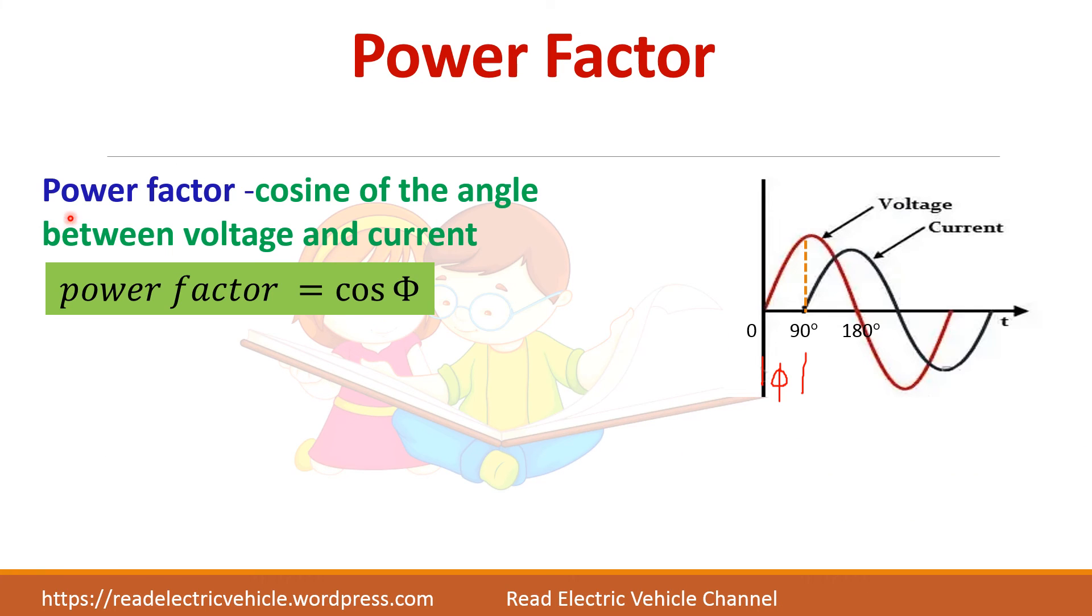Next we will find the power factor. Power factor is the cosine of the angle between voltage and current. So here in this case φ is equal to 90°. So what is cos 90°? Zero. So the power factor for this circuit is said to be lagging, zero lagging. What do you mean by lagging? The current is lagging, so the circuit is said to be lagging.